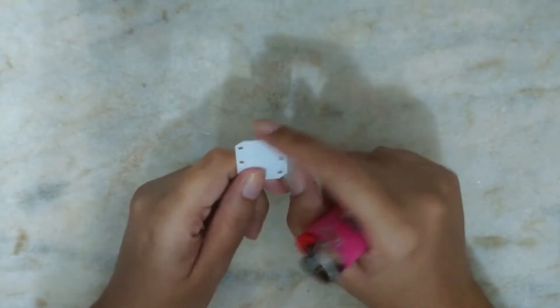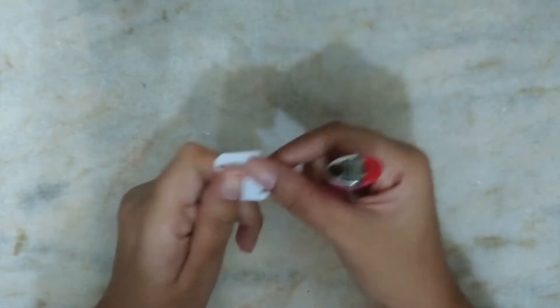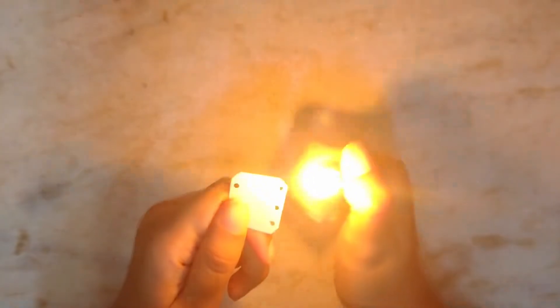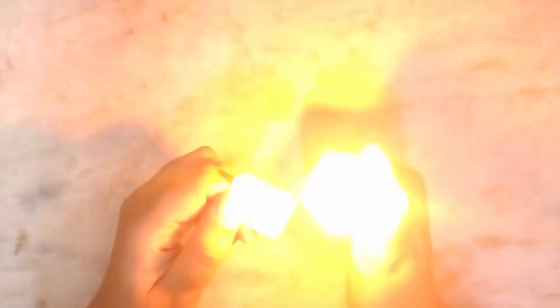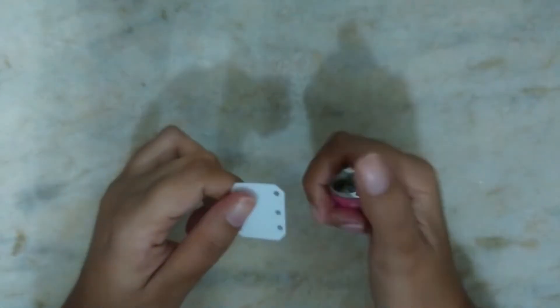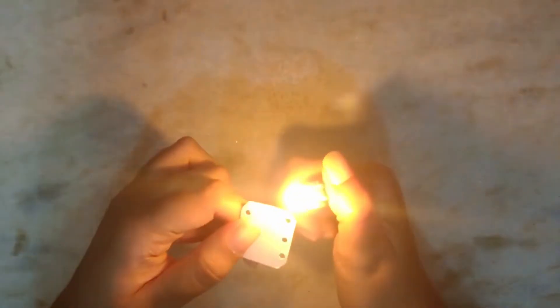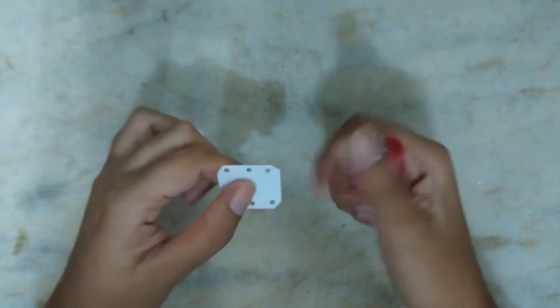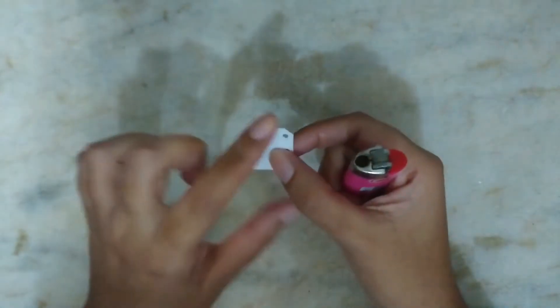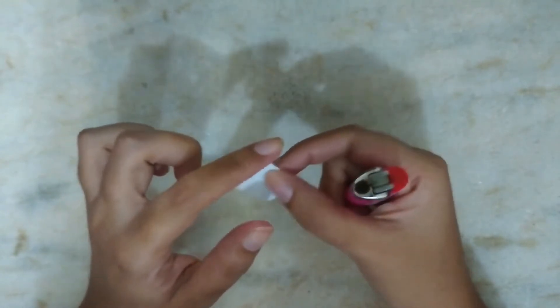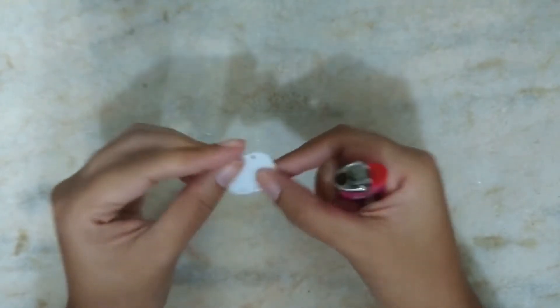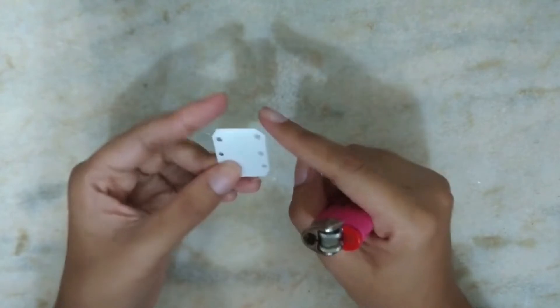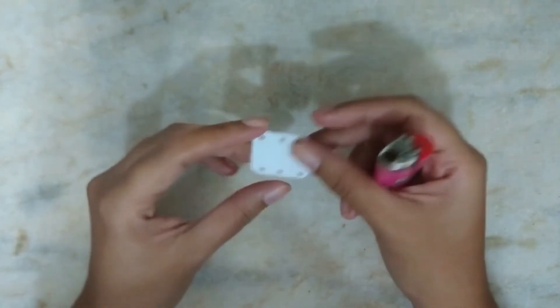Before we start the bracelet, we're going to file this little tip here this way, on this left side, so that they become more rounded. And like this, doing this to all these little tips here this way, they become rounded. Because otherwise they stay pointed and end up hurting when you wear the bracelet.